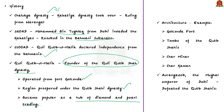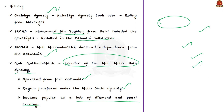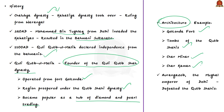The Qutb Shahi dynasty has a glorious legacy in Indo-Islamic architecture. Notable examples include the Golconda Fort, the tombs of the Qutb Shahis, Char Minar, and Char Kaman. The dynasty came to an end when Aurangzeb, the Mughal emperor of Delhi, invaded and defeated the dynasty.